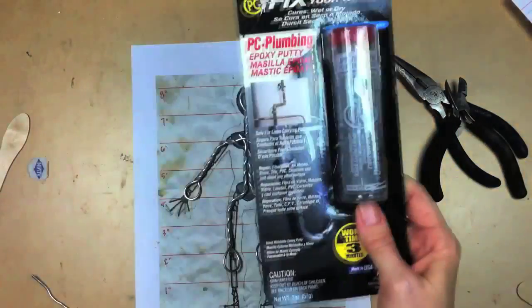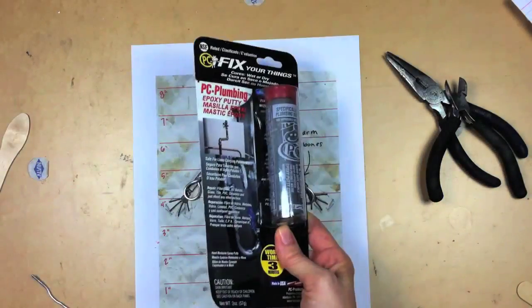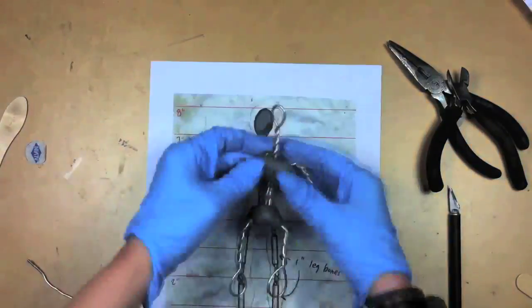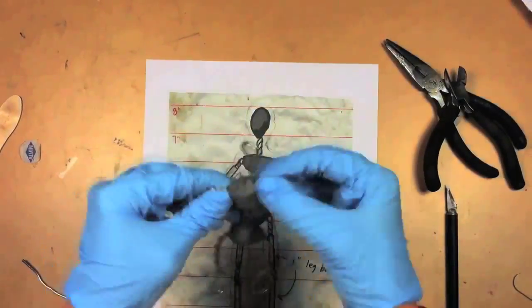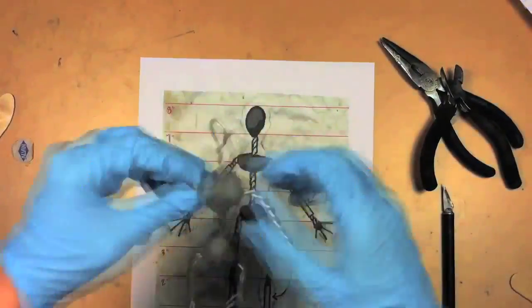The head, chest, and hips are reinforced with epoxy putty, or plumber's putty you can get at the hardware store. When this stuff dries, it will be solid as a rock.